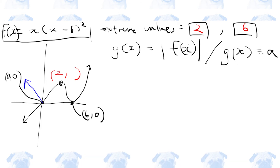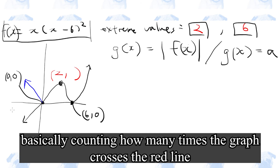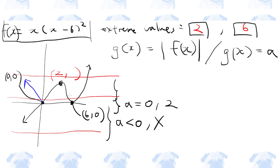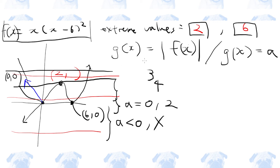The second statement, g of x equals some constant a, means we draw horizontal lines and count intersections with the graph. When a is less than 0, there are no intersections. When a equals 0, there are exactly 2 intersections. When a is in a certain range, there are 4 intersections. When a is at the local maximum value, there are 3 intersections. Above that, there are 2 intersections. So there can be at most 4 intersections.